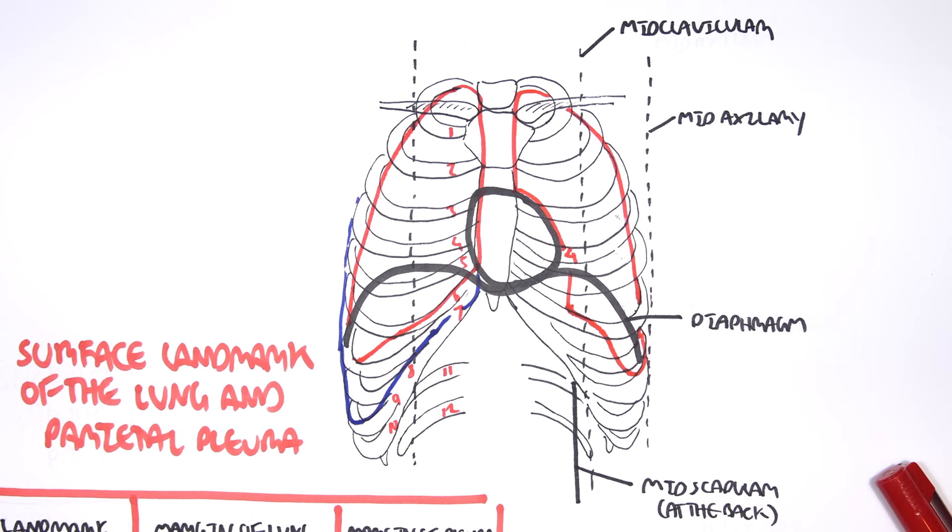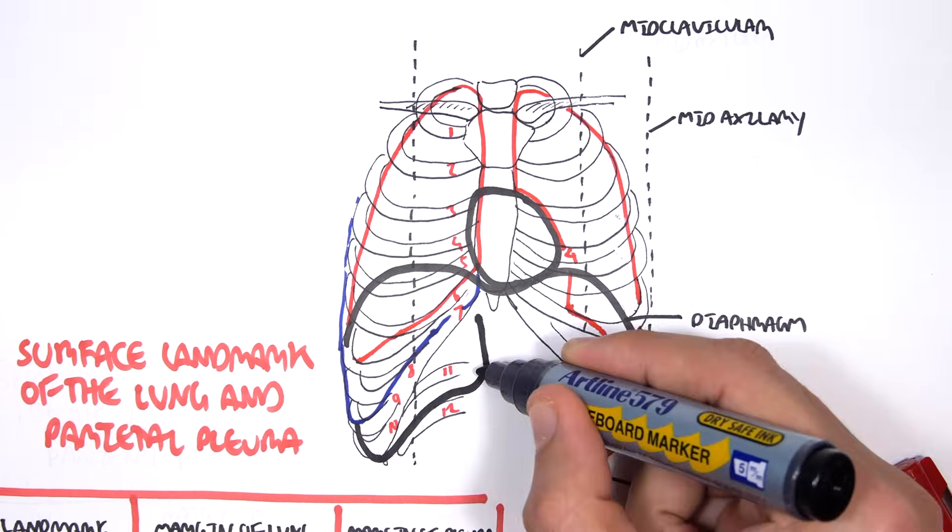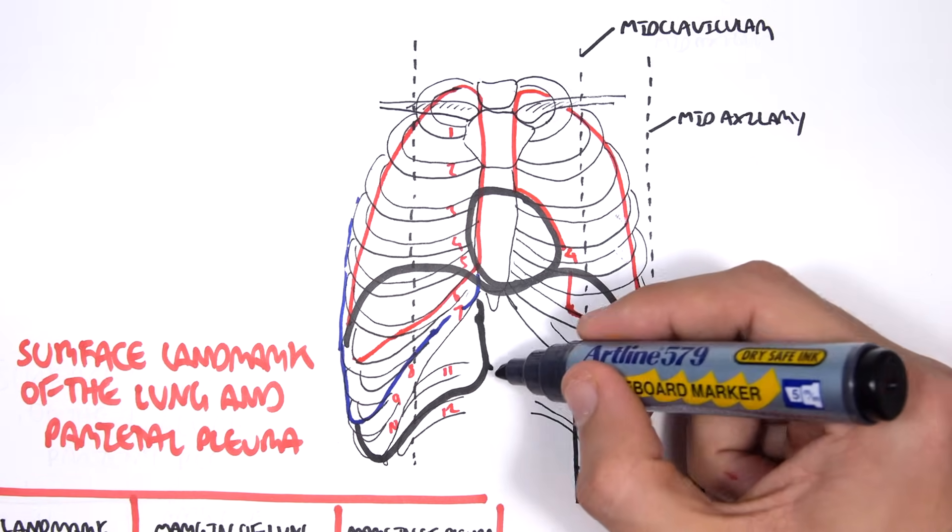Just to finish off this diagram, the liver or most of the liver can be found under our ribs for protection.